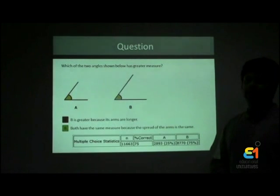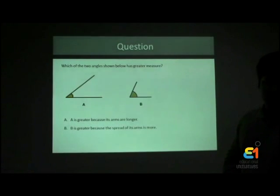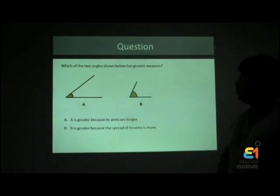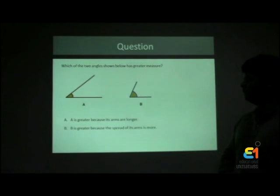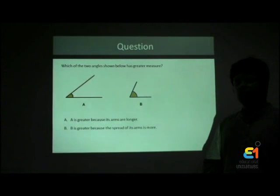Let's take a look at another MindSpark question which captures this misconception. Which of the two angles shown below has greater measure? Option A is A is greater because its arms are longer. Option B is B is greater because the spread of its arms is more. What do you think is the correct answer to this question?